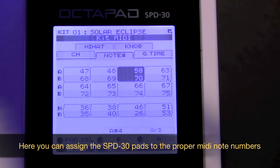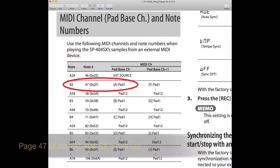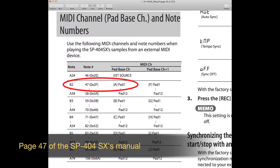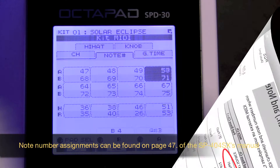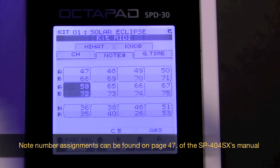By default, the SPD30's first pad in the top left is assigned to note number 60. If you wanted to trigger pad 1 in bank A, you would have to assign that pad to note number 47. As you can see on page 47 of the manual, bank A pad 1 begins at note number 47. So on the SPD30, for the first pad on the top left, you'll want to change it from 60 to note number 47. That will then trigger whatever sample you have assigned to pad 1 on bank A in the SP404SX. Make sure that you assign the note numbers to both the A and B section of each pad on the SPD30.